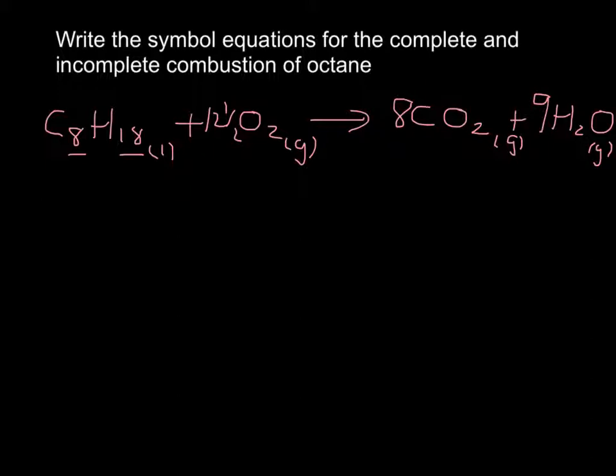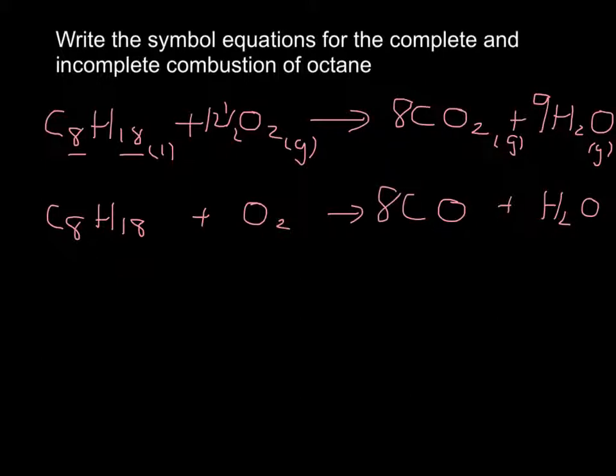Incomplete combustion is the same except you make carbon monoxide. So we do the same plus O2, this time we make CO plus H2O. Balancing again you've got to have an 8 there, you're still going to have a 9 there.